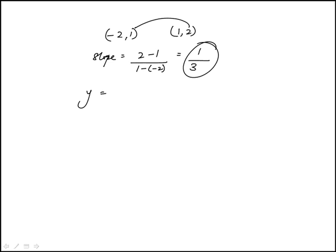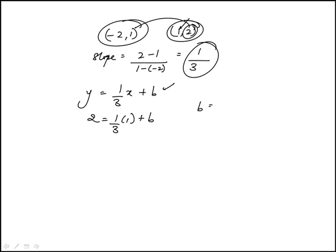And so the equation would be y equal to 1 third x plus b, and all we need to do is to find the y intercept. We can use either one of these points to find b, so here we'll just use the positive one, so when x is 1, y needs to be 2, so b is 2 minus 1 third, which is 5 third.